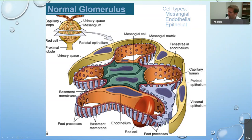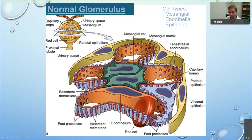When we take that three-dimensional sphere and cut it in two dimensions, this is what it looks like to the pathologist. We have what we call Bowman's capsule, which is a sheath around it lined by a certain cell, and then we have our capillary loops and mesangium. Mesangium is very important in IgA — this is where IgA actually deposits within the kidneys to start the disease process.